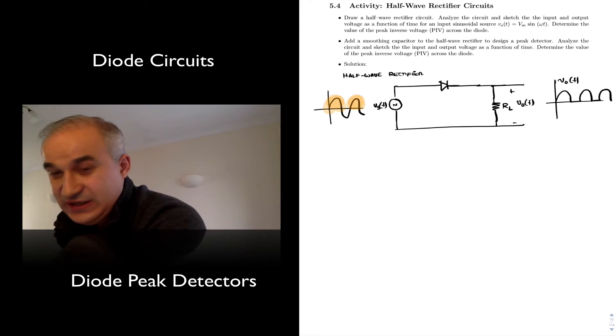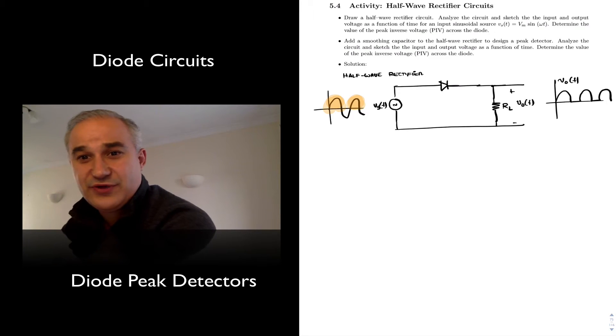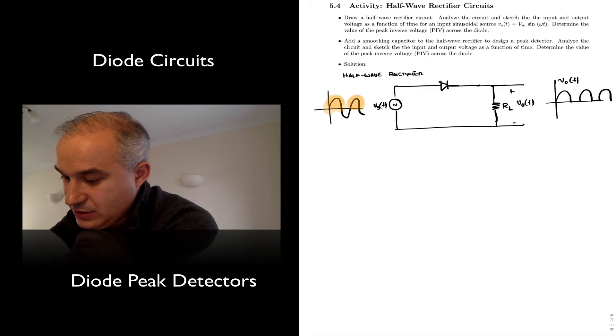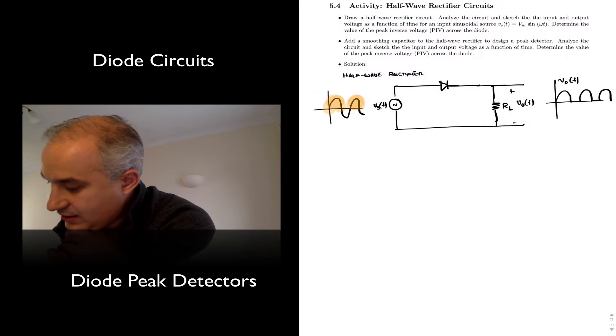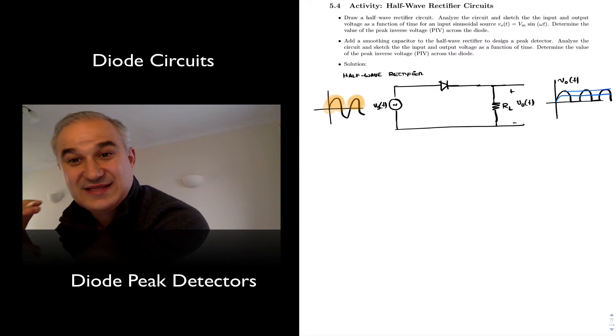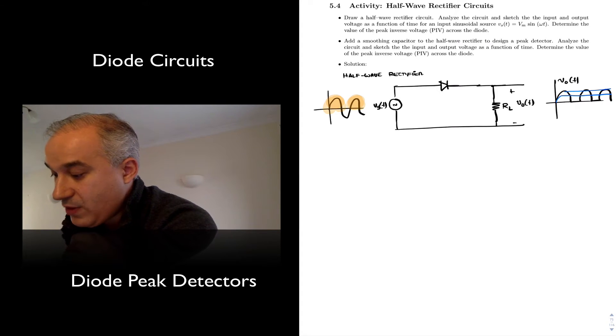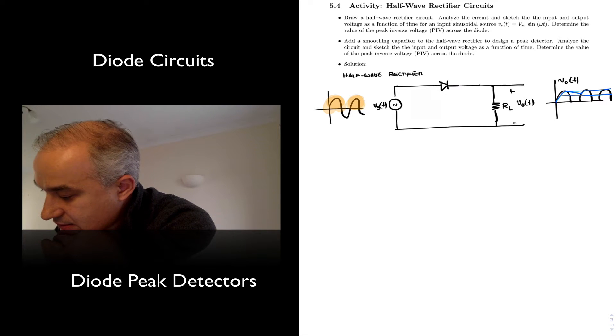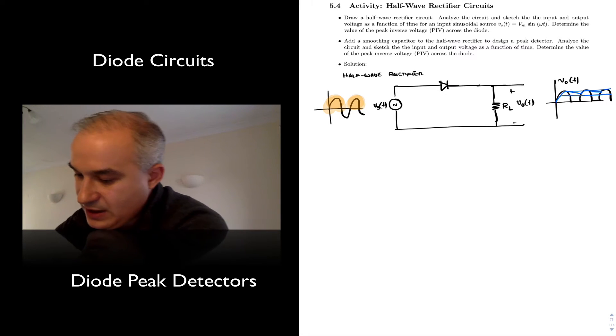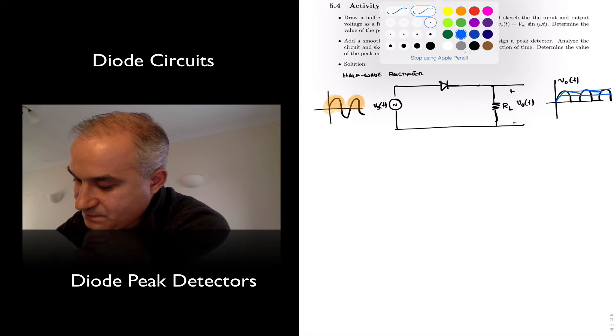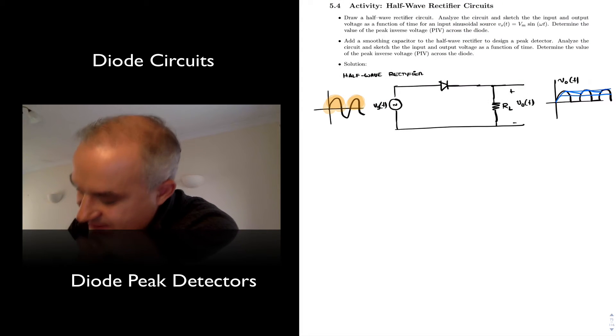So what happens if we want to smooth this out? For instance, in the context of a power supply application, we will want, ideally, what we want is a constant supply, maybe a lower constant supply, maybe something like this, but it is stiff. Or we may want to just detect peaks. So for that, we can create a peak detector.